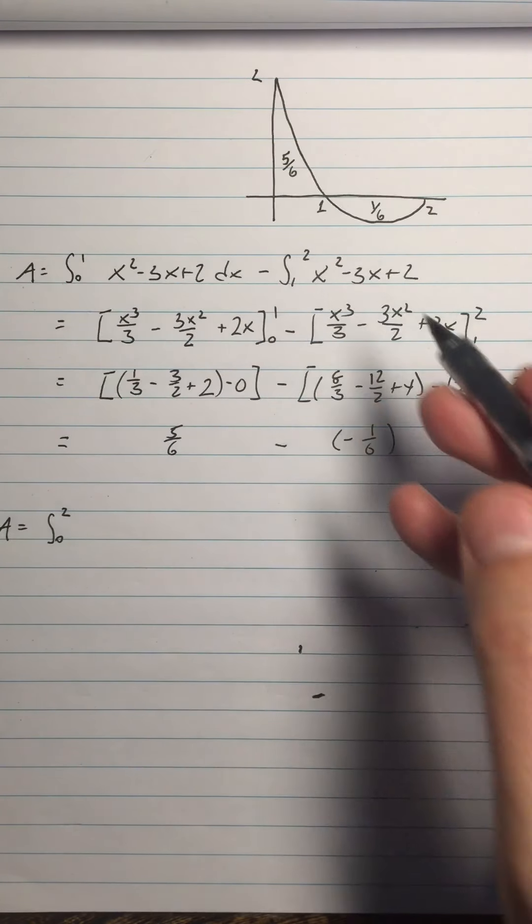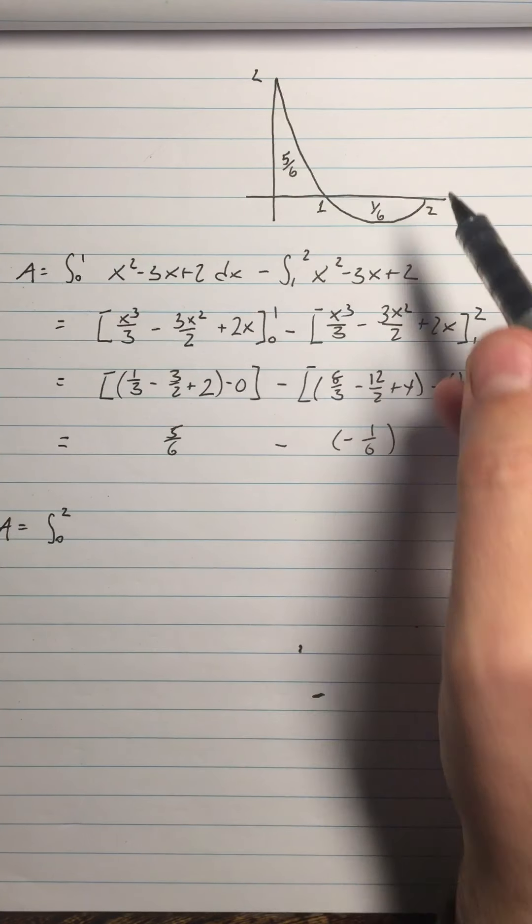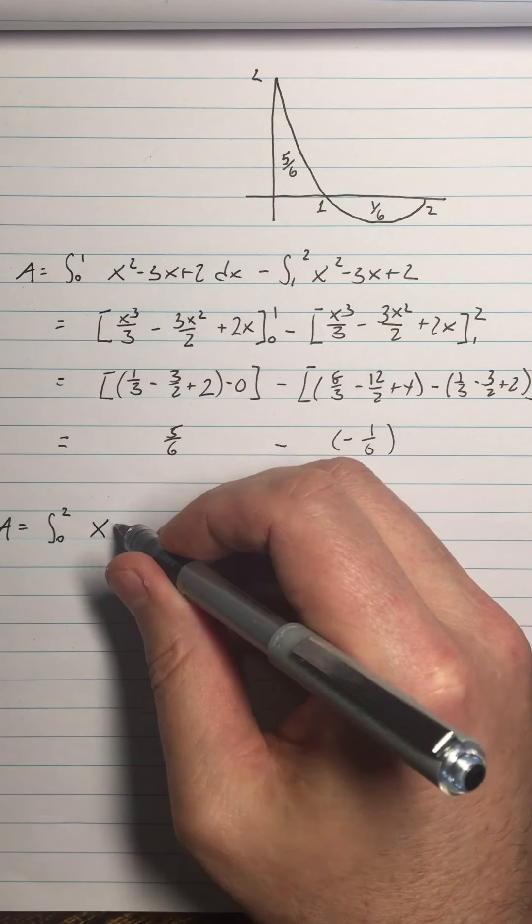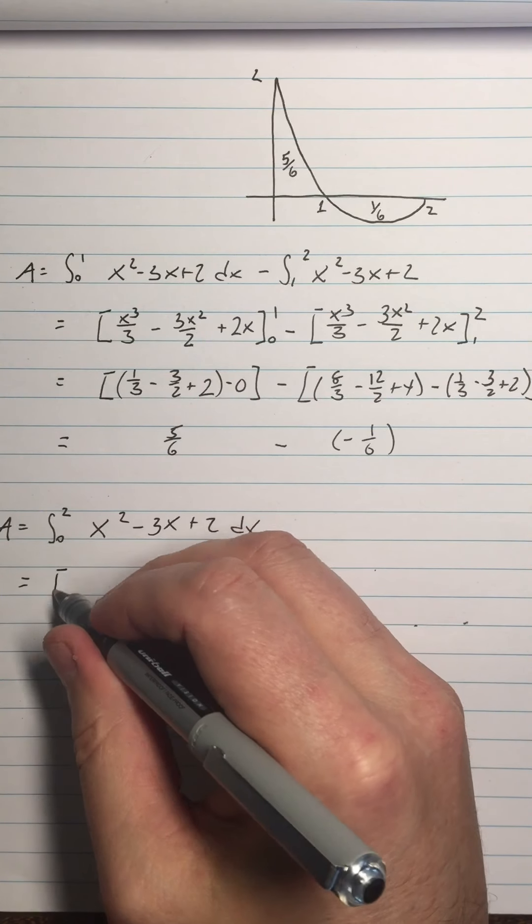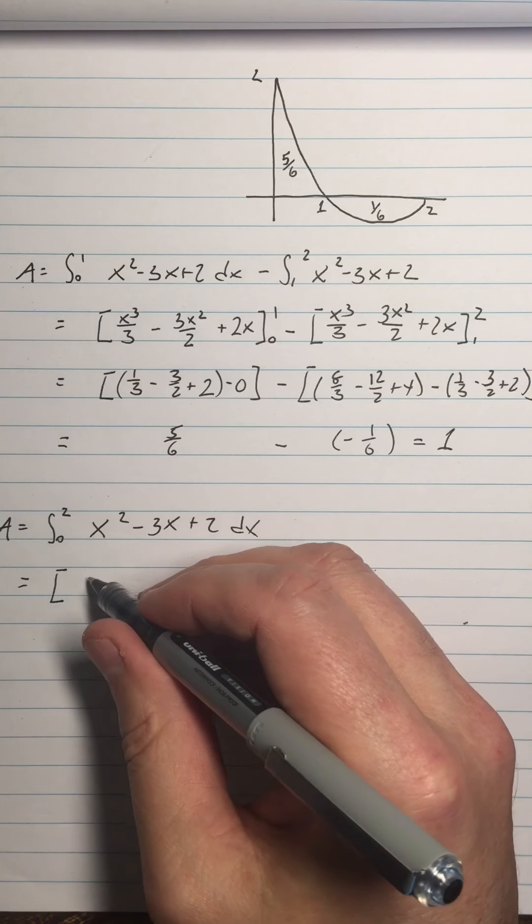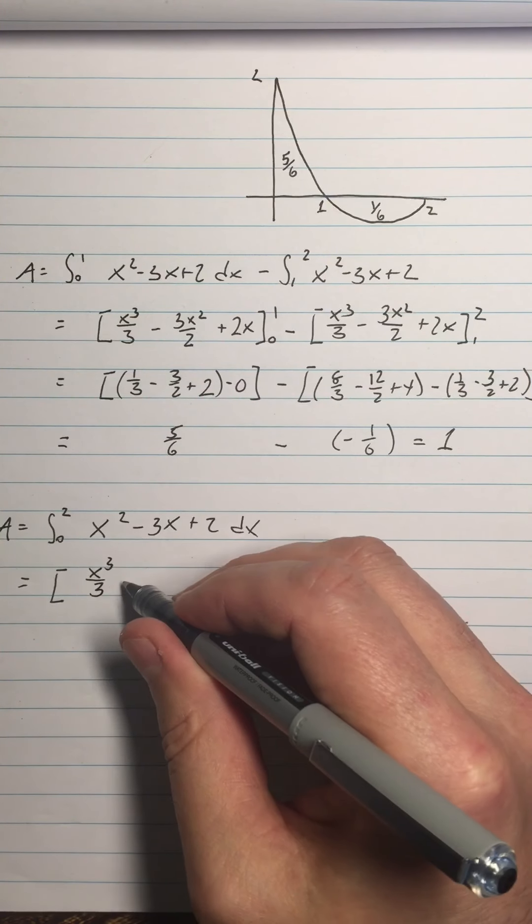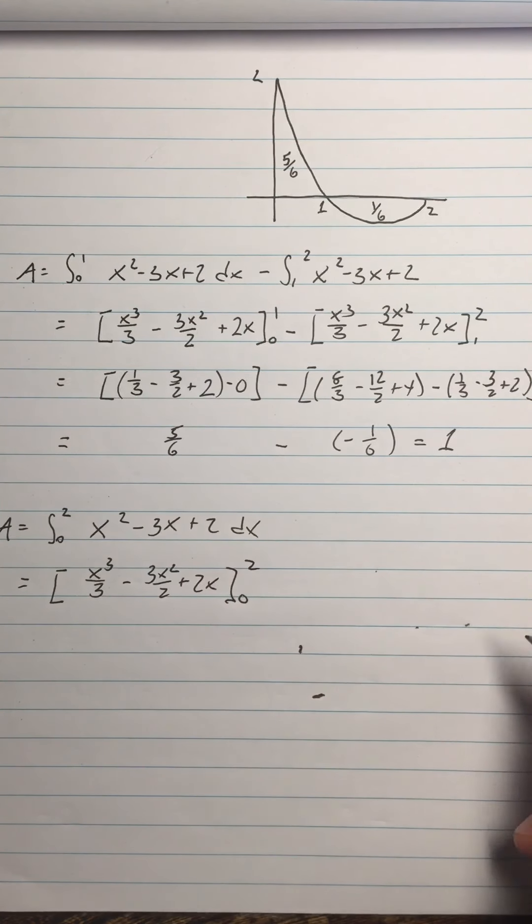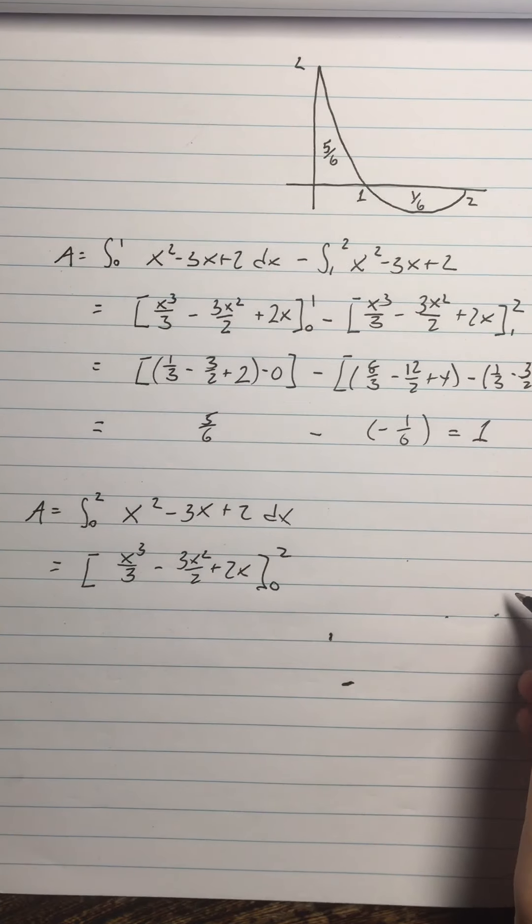if I just got the integral from 0 to 2 of this function, I'd have integral 0 to 2 of x squared minus 3x plus 2 dx, and that equals, and by the way this equals 1 up here. So I still have the same antiderivative x cubed over 3 minus 3x squared over 2 plus 2x, but now I'm just going straight from 0 to 2 without breaking the interval up.